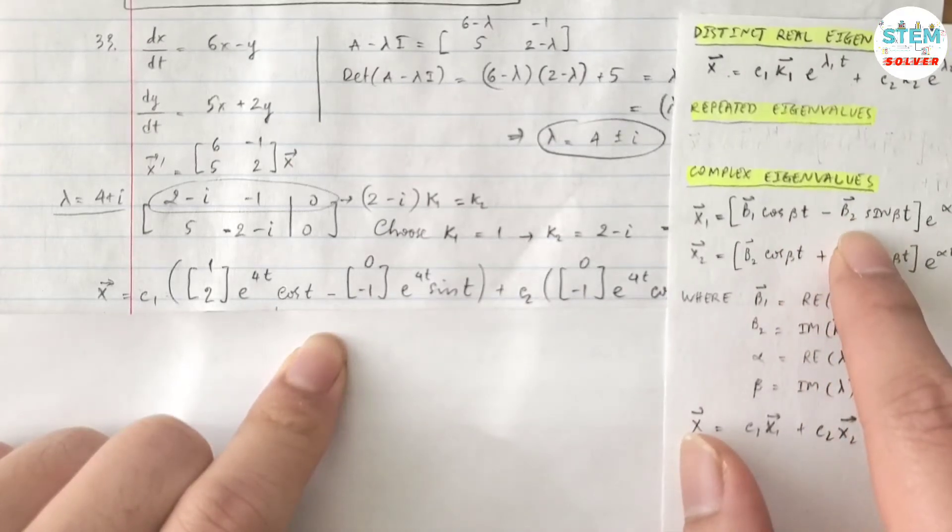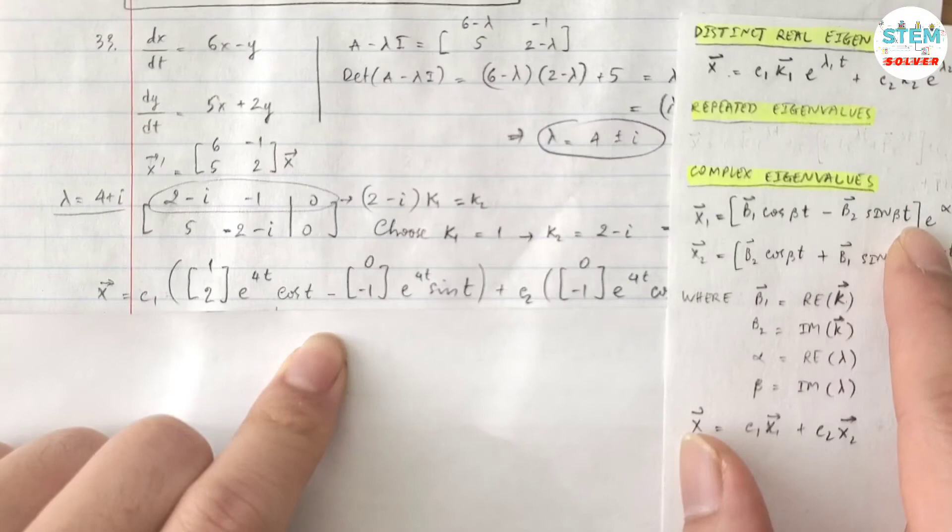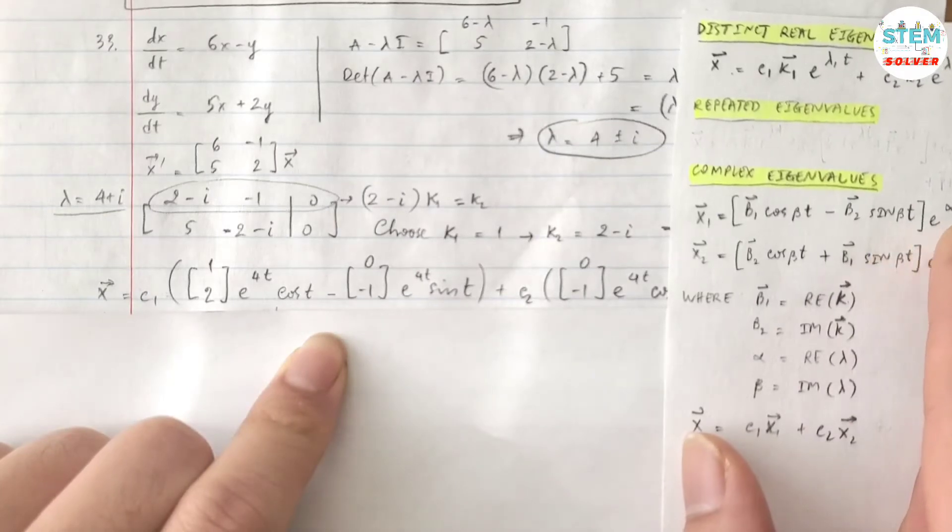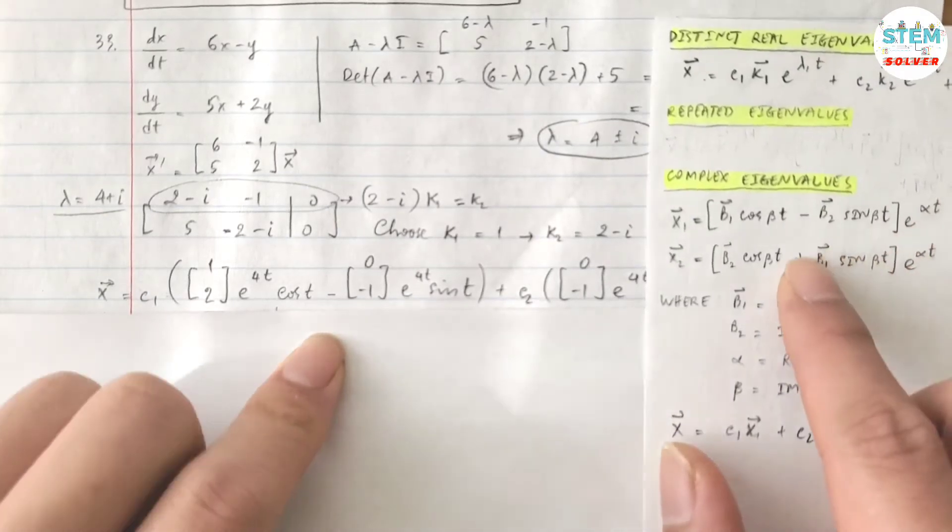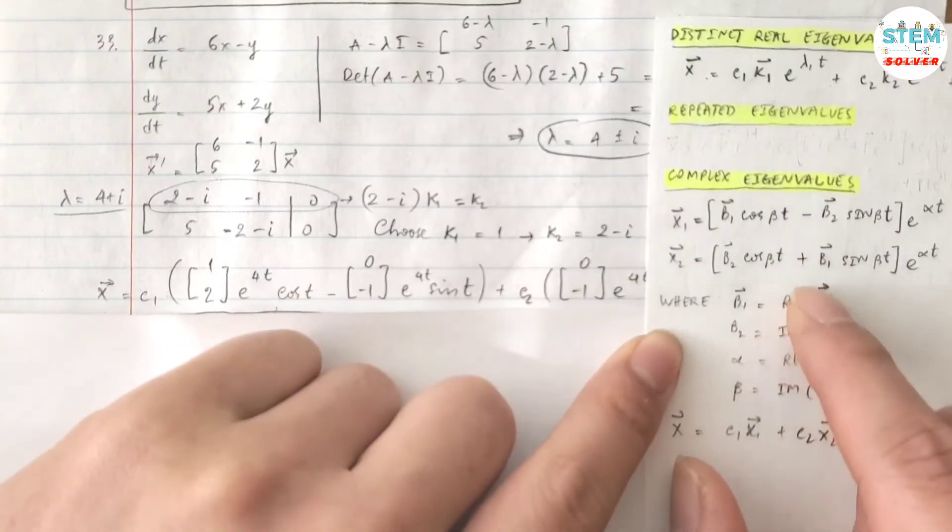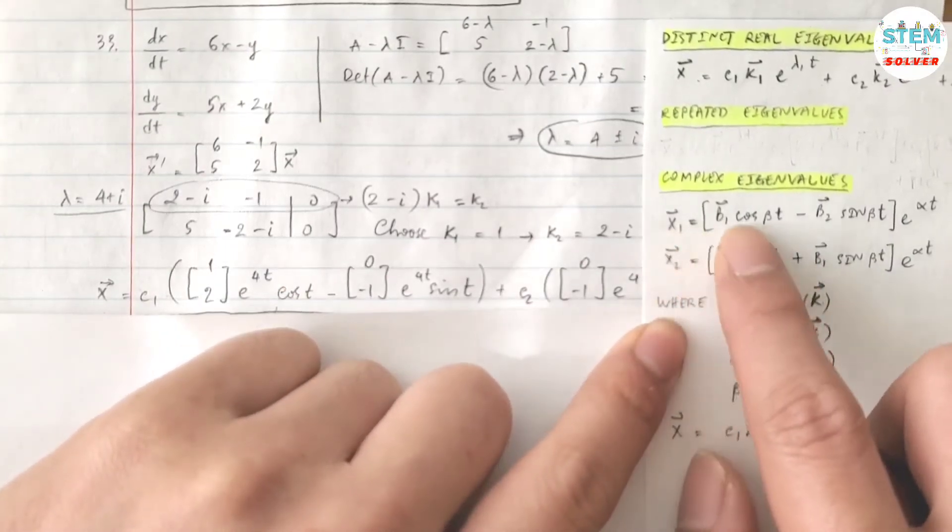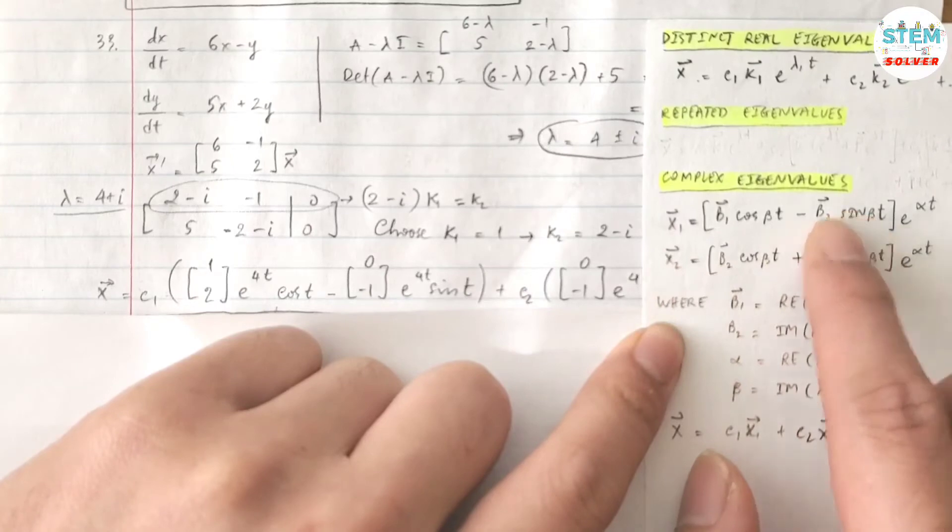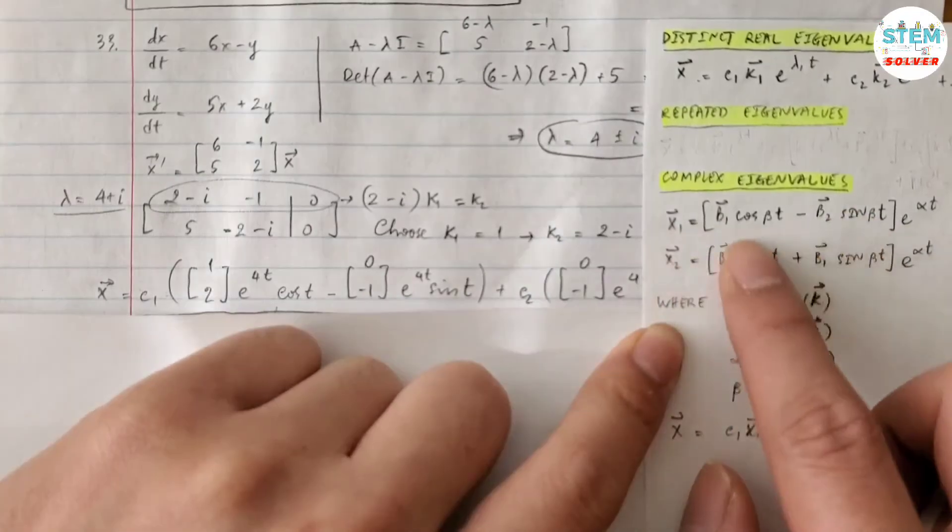minus vector b2 times sin(βt) all multiplied by e^(αt). Okay, so first take a look at the answer first and then I'll explain my final answer later. So you have this one for x1 and x2 you just switch b2 and b1, okay? Everything else stays the same.